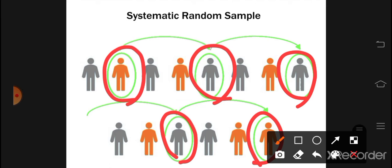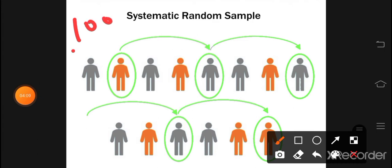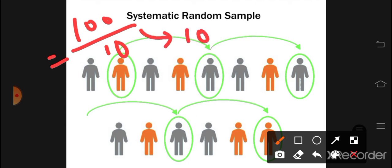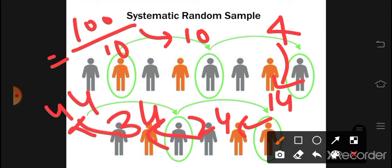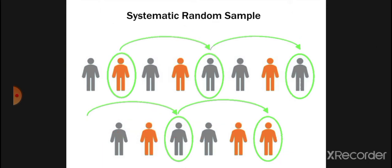You take samples at regular intervals. For example, if total population is 100 and you need 10 samples, the sampling interval is 100 ÷ 10 = 10. You choose every 10th number. If you start at 4, you get: 4, 14, 24, 34, 44, 54, 64, 74, 84, 94 — until you reach 100. These are your samples. This is systematic random sampling.